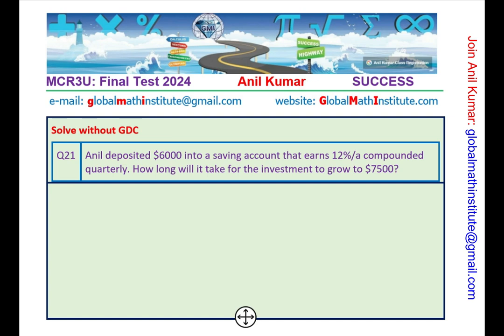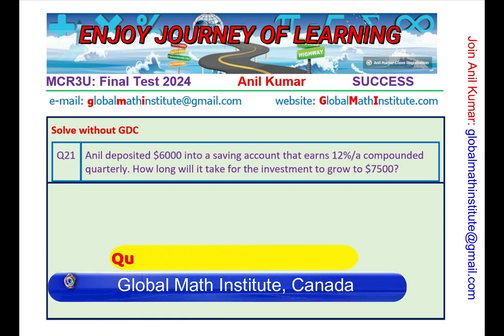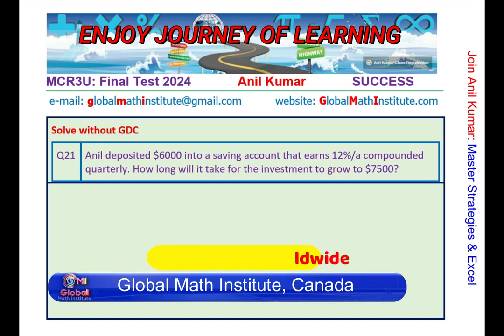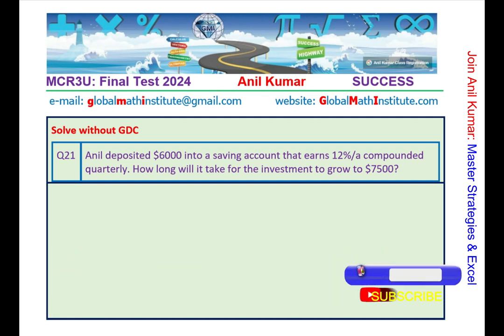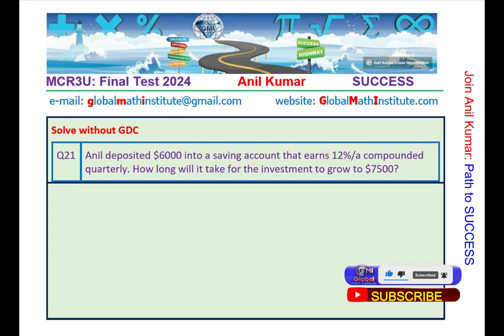And now the last question of the test. Anil deposited $6,000 into a savings account that earns 12% per annum compounded quarterly. How long will it take for the investment to grow to $7,500? You might have to use logarithms to answer correctly. You may round this number to the number of months.